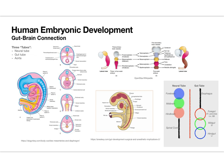Looking more deeply at embryonic development, there are some interesting phenomena connected with gut and brain formation. Looking at three tubes — the neural tube shown in blue, the gut tube shown in yellow, and the aorta and heart in the middle — in cross-section we see three tubes: the neural tube, the gut tube, and the aorta. The heart is a little complicated — it actually starts to form towards the top of the head and only then moves inwardly during the beginning of week three.